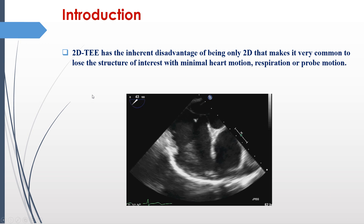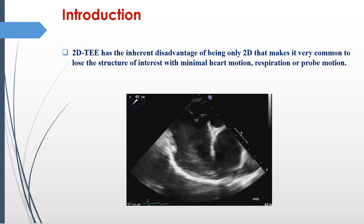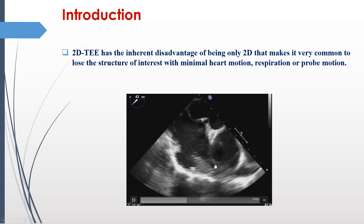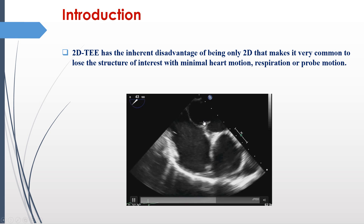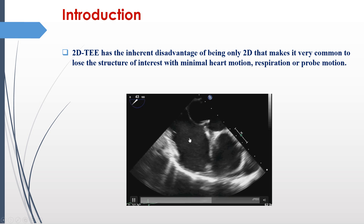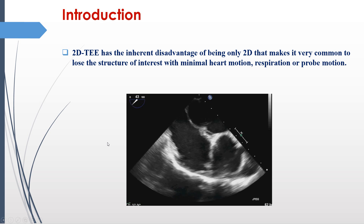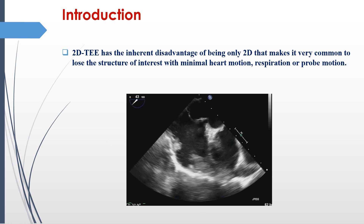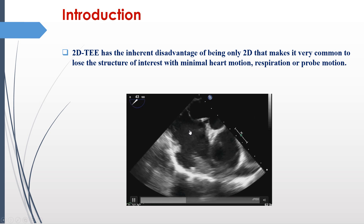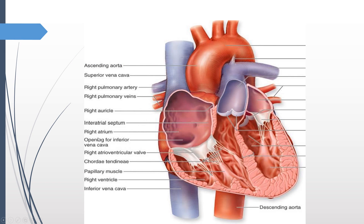As an introduction, two-dimensional TEE has an inherent disadvantage of being only 2D, which makes it very common to lose a structure of interest with minimal heart motion, respiration, or probe motion. As you can see from this image — a short axis-based image from two-dimensional TEE — this is the aortic root, this is the septum, and you can see the catheter tip here tenting the septum. With simple heart motion, I can lose the tip of the catheter, and the rest of the catheter cannot be seen in many instances. This consumes time and increases fluoroscopy time as well.